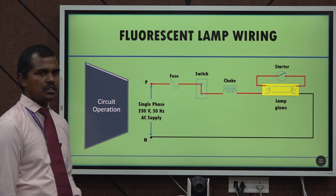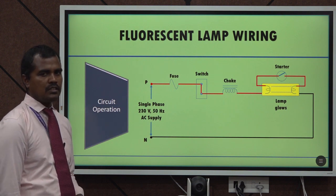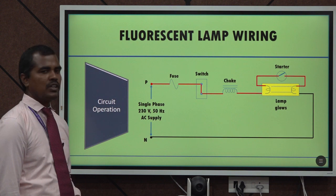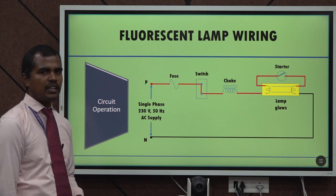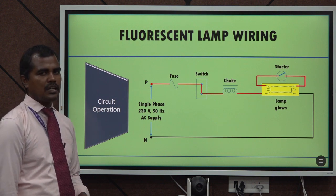And here the choke is required to build up the voltage so that the electrons will emit from one end of the electrode to reach another end of the electrode.